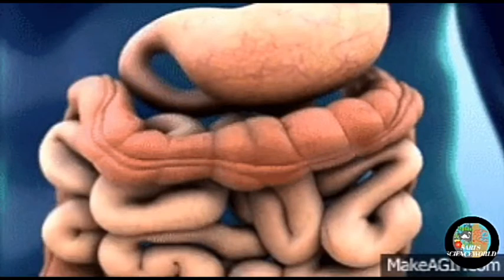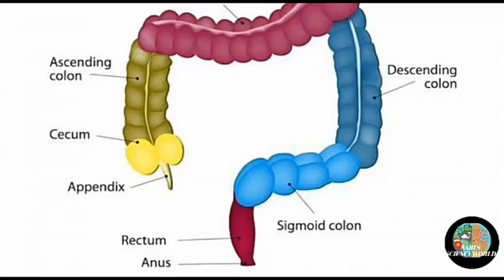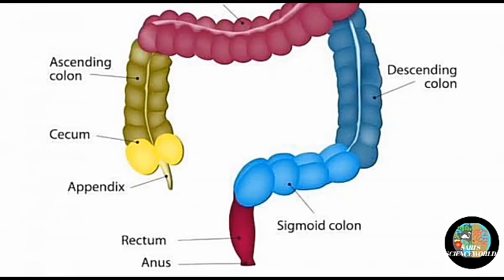The large intestine is wider and shorter than the small intestine. Its three divisions are the cecum, colon, and rectum. The large intestine absorbs water and minerals from the food, and sends the indigestible matter to the rectum. The fecal matter is removed through the anus.